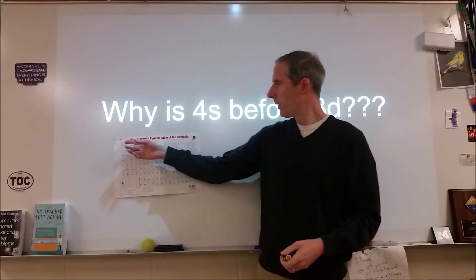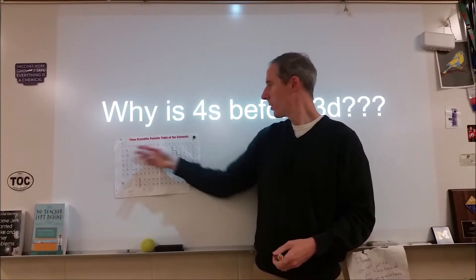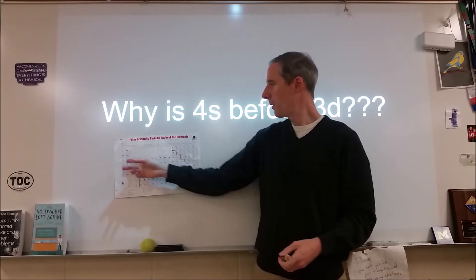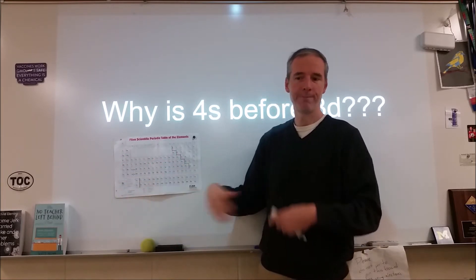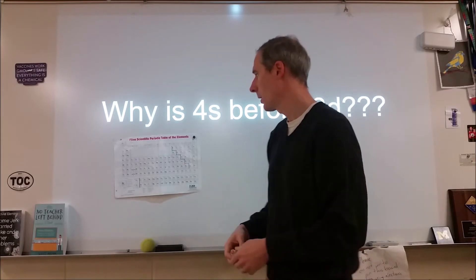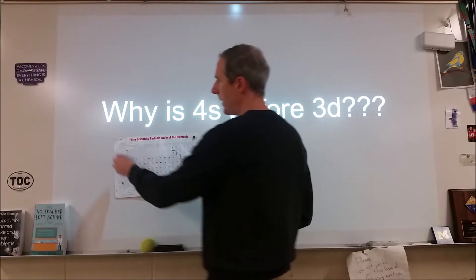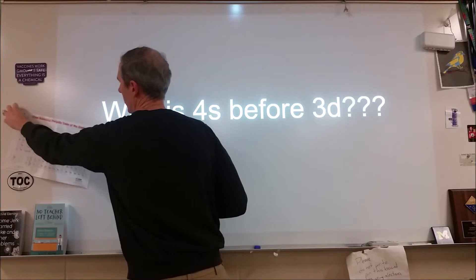So when we're counting on the periodic table, we're doing electron configurations, we go 1s, 2s, 2p, 3s, 3p, 4s, 3d. Why is the d one behind? It's a common question in chemistry class. I want to talk about why it is and give you a little background on what's going on here.